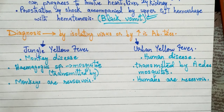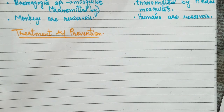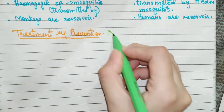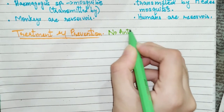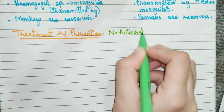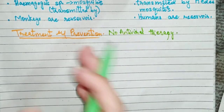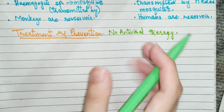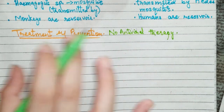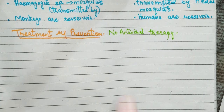The incubation period is 3 to 6 days. When we talk about treatment, there is no antiviral therapy available, and there is notable mortality because it is a severe disease. However, after recovery there is no chronic infection, and after infection there is life-long immunity.